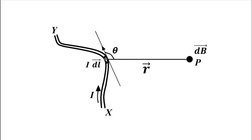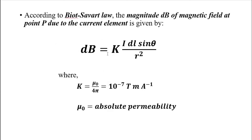The dl vector is directed tangent to the conductor and makes an angle theta with respect to the position vector of point P. According to Biot-Savart Law, the small magnetic flux density dB vector due to the small length dl and the current element I·dl is given as: dB = k · I·dl · sin θ / r².